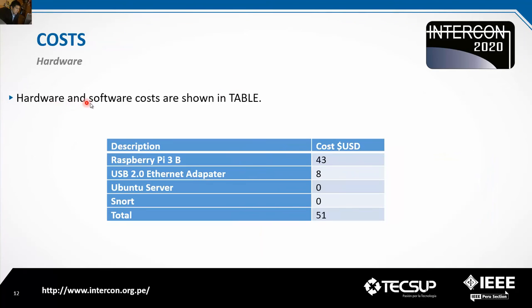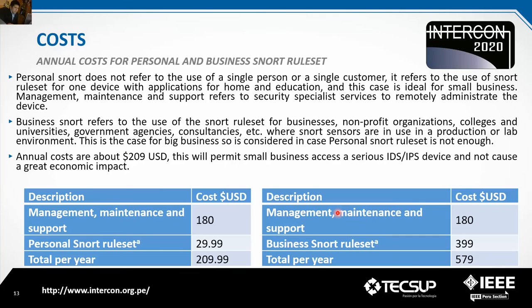Hardware and software costs: Raspberry Pi 3B is $43 USD, the USB Ethernet adapter is $8 USD, totaling $51 USD in hardware. The annual cost for the personal Snort rule set is about $30 USD, management, maintenance, and support is $180 USD, giving a total of approximately $209 USD per year.